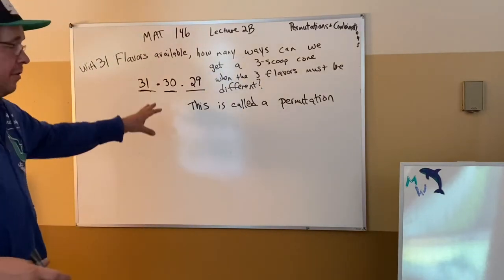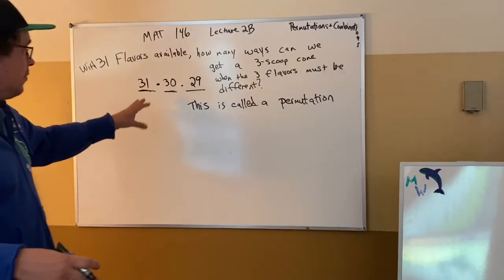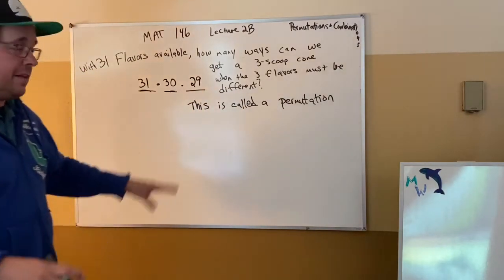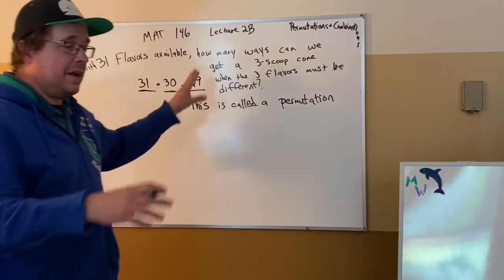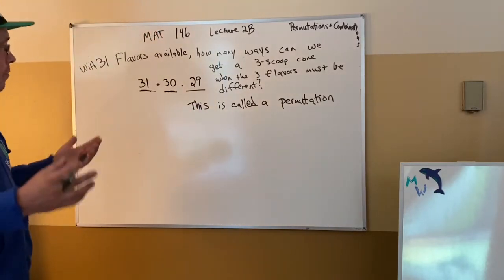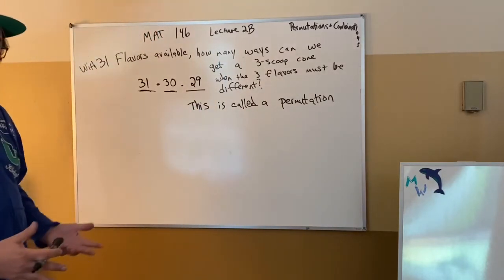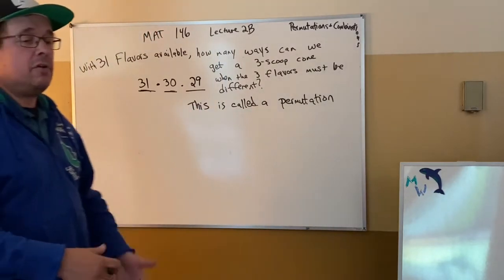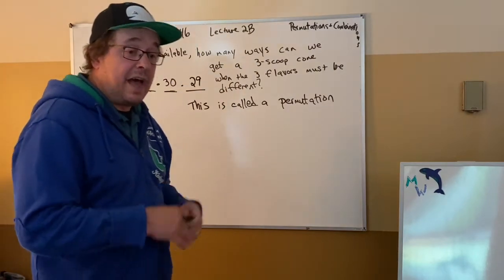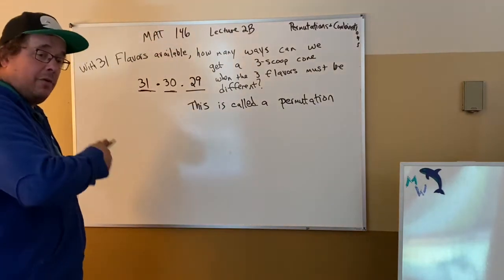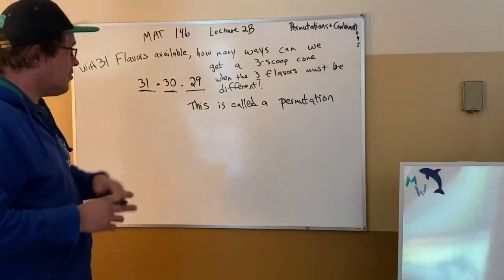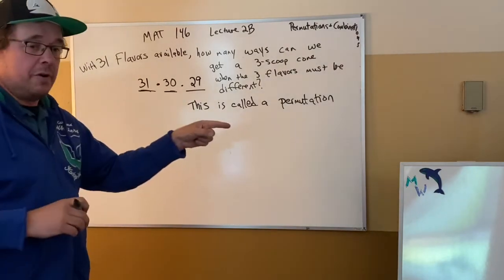It's a permutation because you didn't use the whole list of ice creams — you went down the list in order and then stopped. Maybe you did 31, 30 for two scoops, or 31, 30, 29 for three scoops. You could go 31, 30, 29, 28 if you're daring. But it stops. You can't go 31 tall and have it stand up — that would be factorial where you use the entire list. We use a partial list of putting things in order.